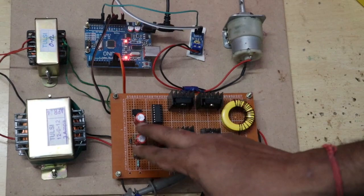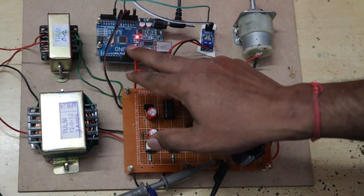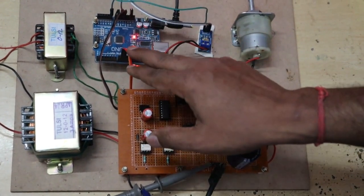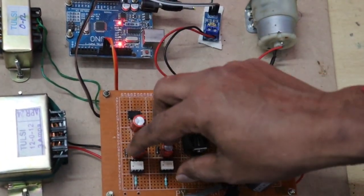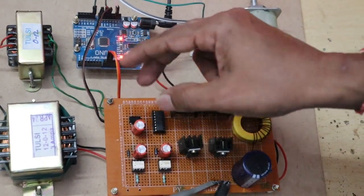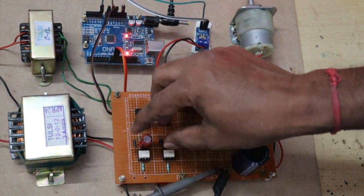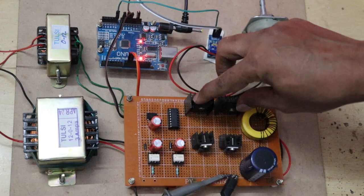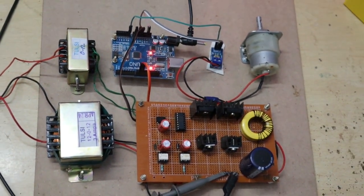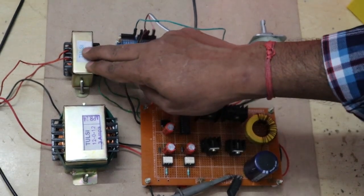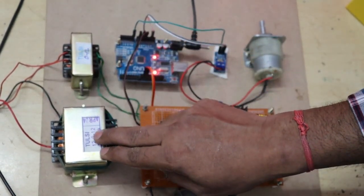Here it is provided to the buffer IC, which isolates the driver circuit and the controller. From the driver circuit, the pulses are provided to the converter. This is the supply for the driver circuit, and this is the supply for the main circuit.